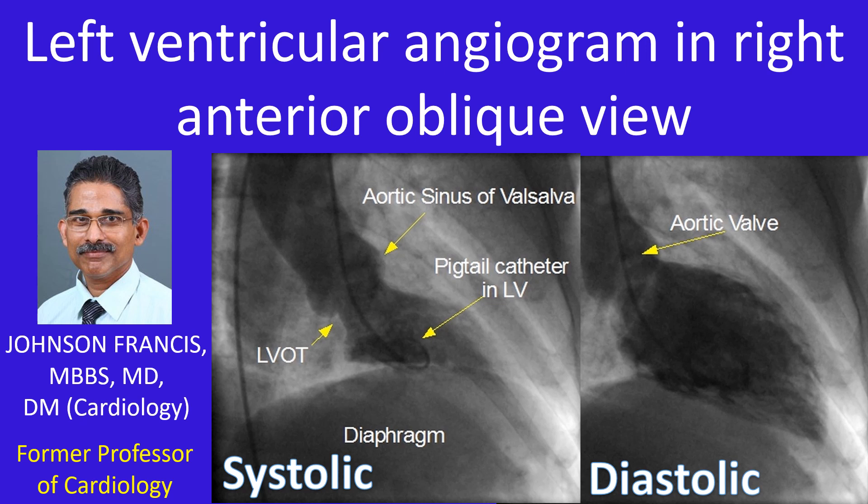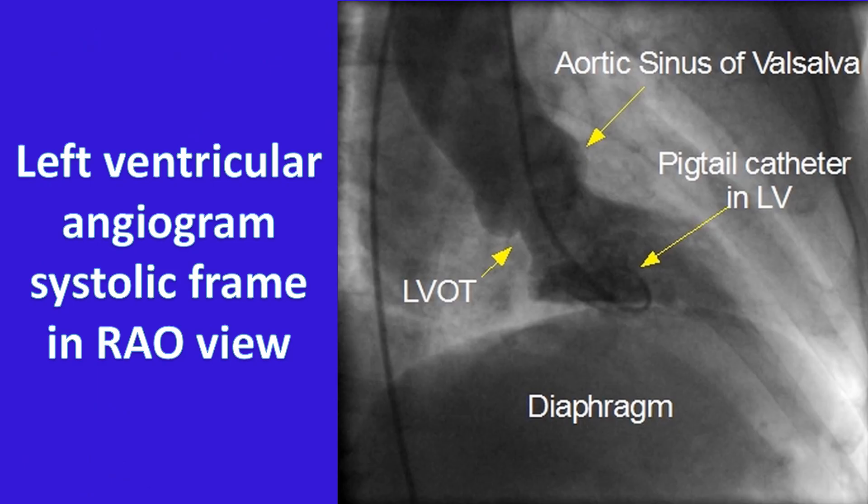This is a description of a left ventricular angiogram in the right anterior oblique view. Systolic and diastolic frames are shown in sequence. The pigtail catheter is seen in the left ventricular cavity.